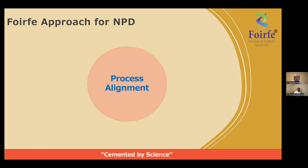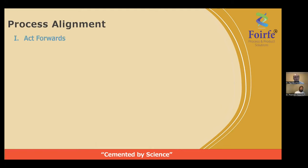We have identified three key areas from our experience working with various clients and on various projects. The first one is process alignment — and these three elements are not in order of priority, we think all three are equally important. So we start with process alignment. The first approach within it is called acting forwards.